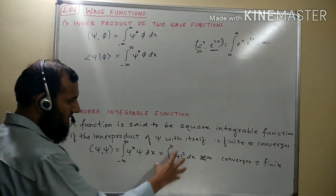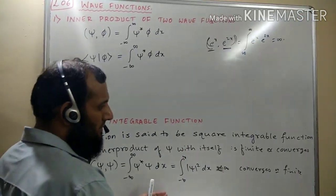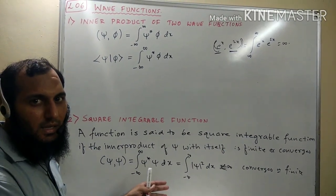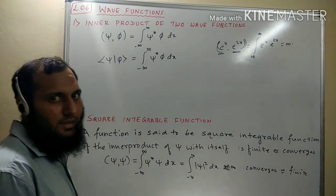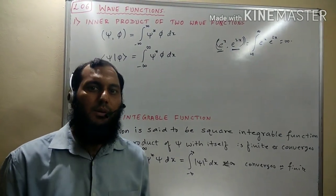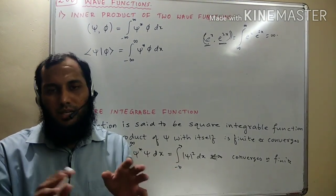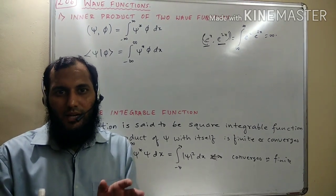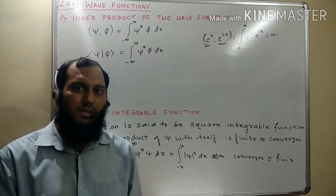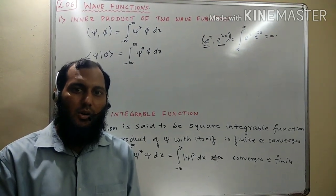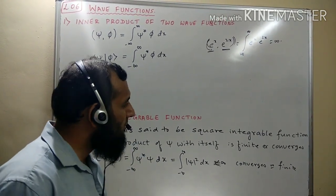Only square integrable functions can be used to find the inner product, because if you take two square integrable functions, each integration will be finite, and when we find the inner product of these two functions the inner product will also be finite. Remember, only square integrable functions are used to find the inner product. All the wave functions psi, phi, and others present in Hilbert space are square integrable functions — they are the elements or vectors of the Hilbert space.